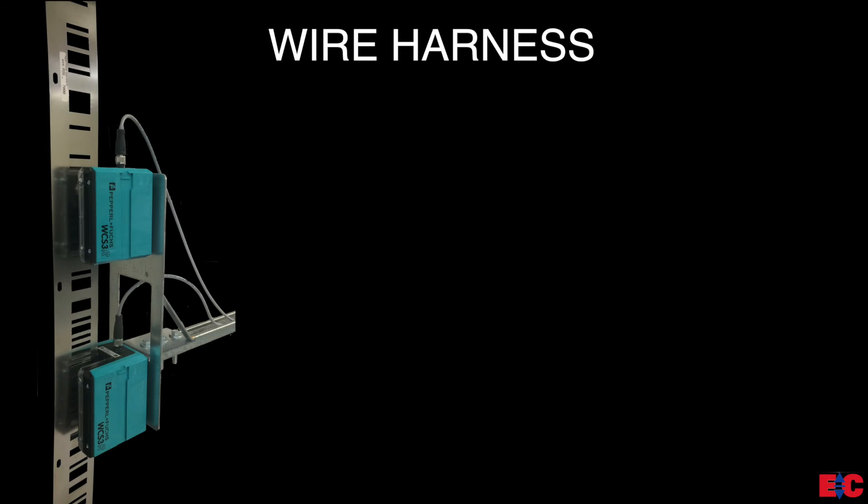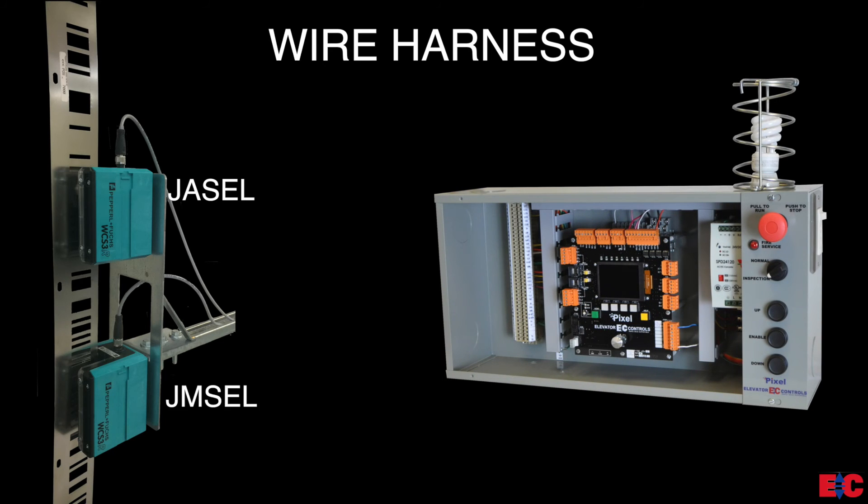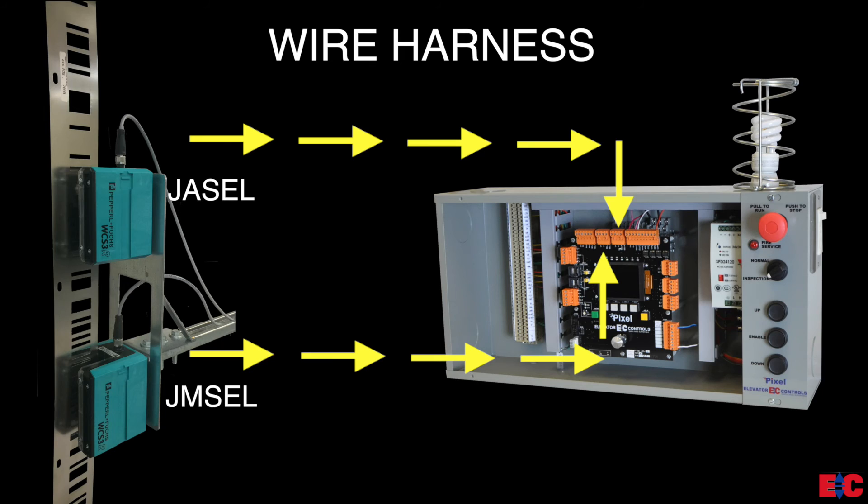The main Lambda tape reader is the bottom reader on the Lambda tape reader bracket and connects to the JMSEL connector on the Pixel TOC board. While the auxiliary Lambda tape reader connects to the JASEL connector on the Pixel TOC board.